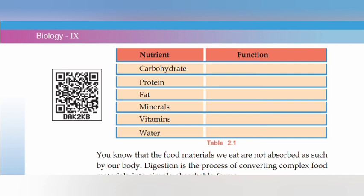This function is called protein. The protein function is called damage. The protein is called bodybuilding nutrient. Carbohydrate is called supply energy.